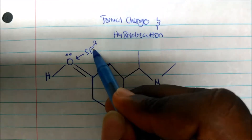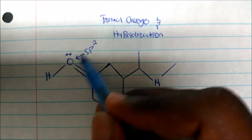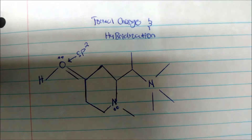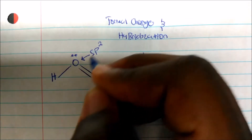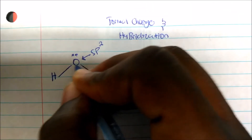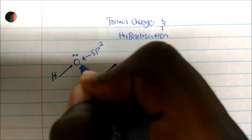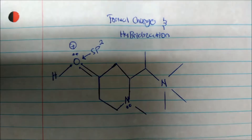Again, you have one, two, three — you have two p's and one s. So let's look at the formal charge. A formal charge is the atom's valence electrons minus the total number of electrons around the atom. Oxygen has a valence electron count of six, and I see one, two, three, four, five around oxygen. So six minus five gives a plus one charge on this oxygen.